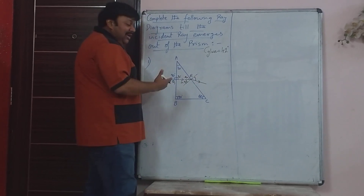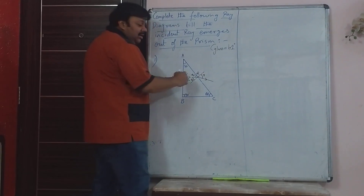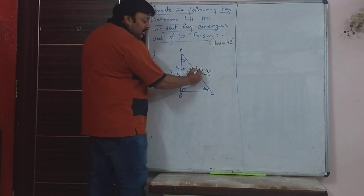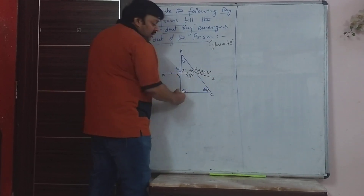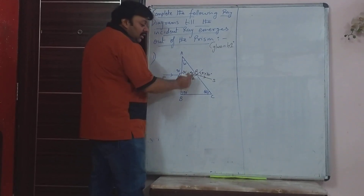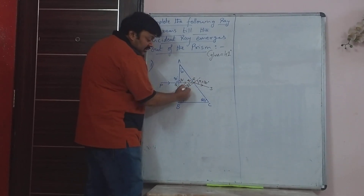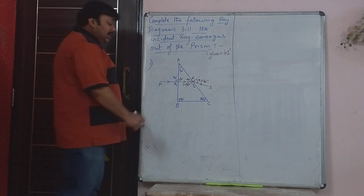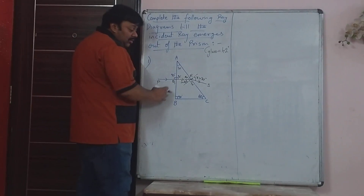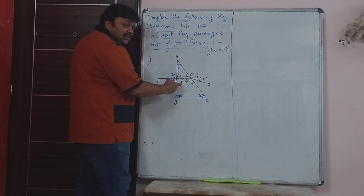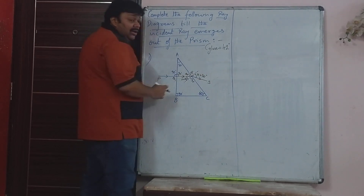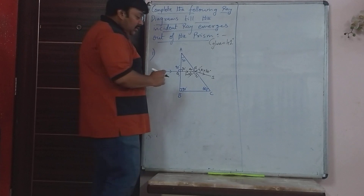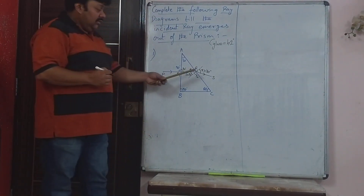You cannot tell the exact angle of refraction, but you can definitely write that R is greater than 30 degrees because it is bent away from the normal. The angle of refraction is greater than the angle of incidence. RS is bending away from the normal, and since the normal is perpendicular to the surface, that angle is 90 degrees. That is how you complete the ray diagram.